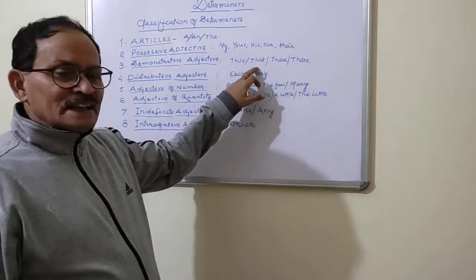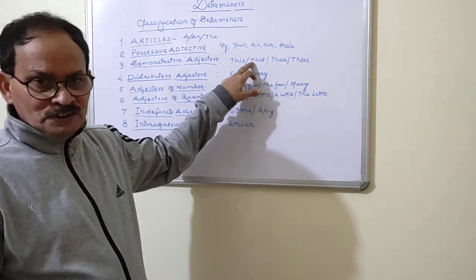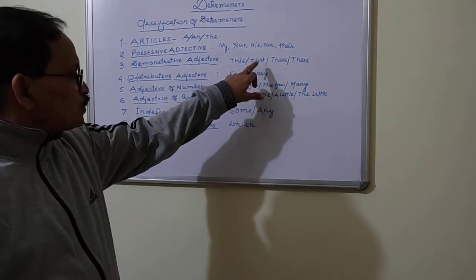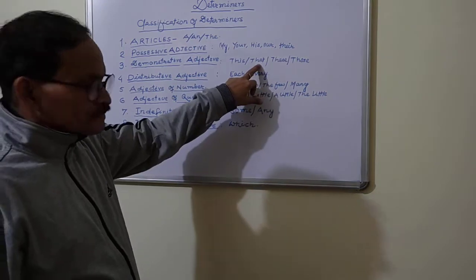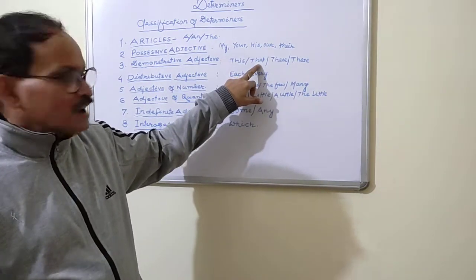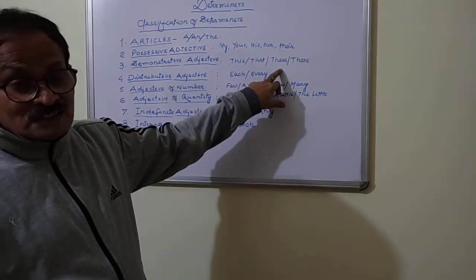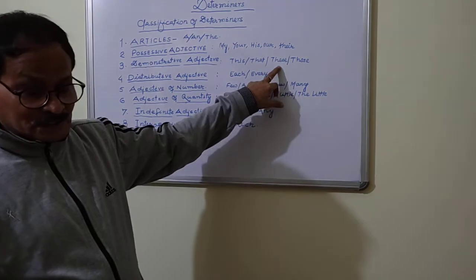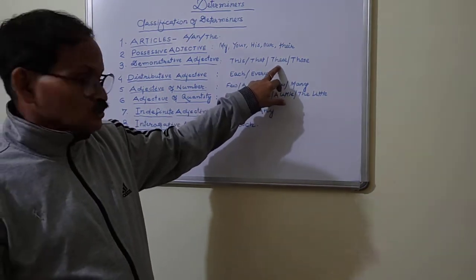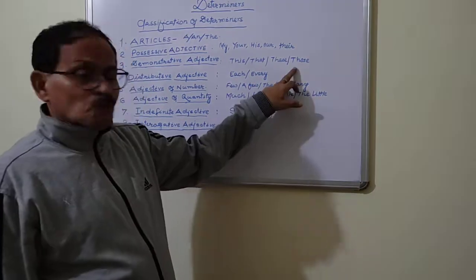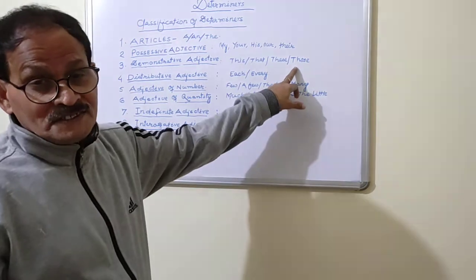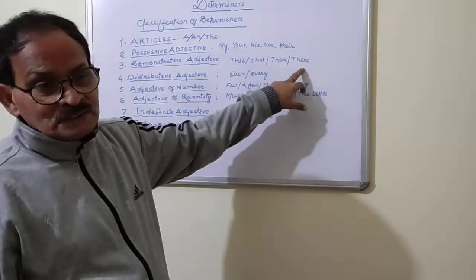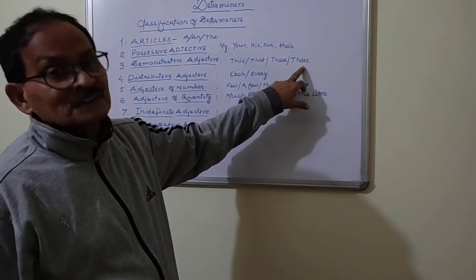'That boy is very intelligent' — 'boy' is the noun here and 'that' is demonstrating the particular boy, so 'that' is used as a Determiner. Similarly, 'these girls are very intelligent' — 'girls' is the noun and 'these' is the demonstrative adjective used as a Determiner. 'Those boys are very naughty' — 'boys' is the noun and 'those' is the demonstrative adjective, hence acting as a Determiner.